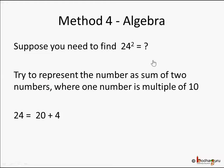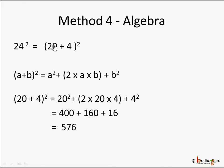What if the number is neither close to a tens number via its previous nor its next number? Take 24 — its previous number is 23 (square not easy) and next is 25. In this case we use a simple algebra formula. Represent the number as a sum of two numbers where one is a multiple of 10. So 24 is 20 plus 4, and 24 squared is (20 + 4) squared.